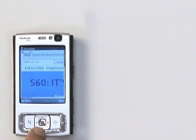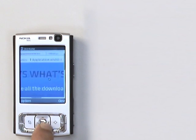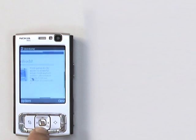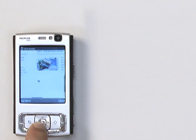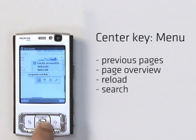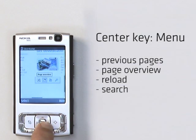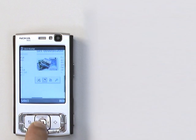Just like with your computer browser, you can set your home page. Here we're looking at s60.com. One of the neat features is this: by clicking on the center key on the page, you get a nifty menu. From the menu you can choose to go back to view previous pages, change the view to page overview, reload the page, or search for stuff on the page.